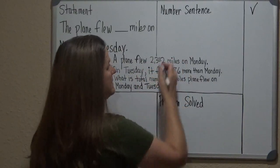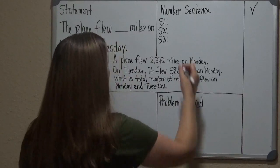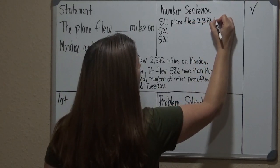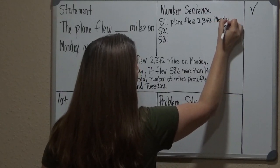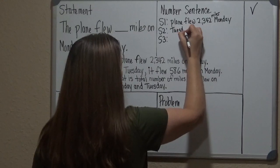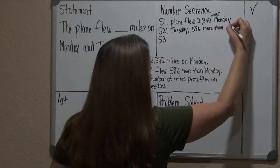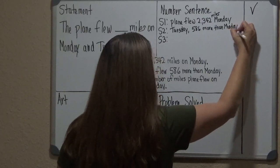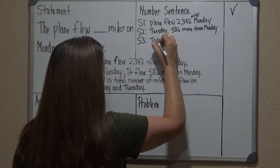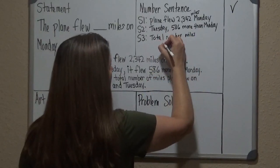For the Number sentence, we count how many sentences we have — we have three sentences. This is where you write the key words and key digits. Sentence 1: plane, flew, 2,342, Monday, miles. Sentence 2: Tuesday, 586 more than Monday. Sentence 3: what's the total number of miles the plane flew on Monday and Tuesday — so you write total, number, miles, and Monday and Tuesday, or you can write both days.